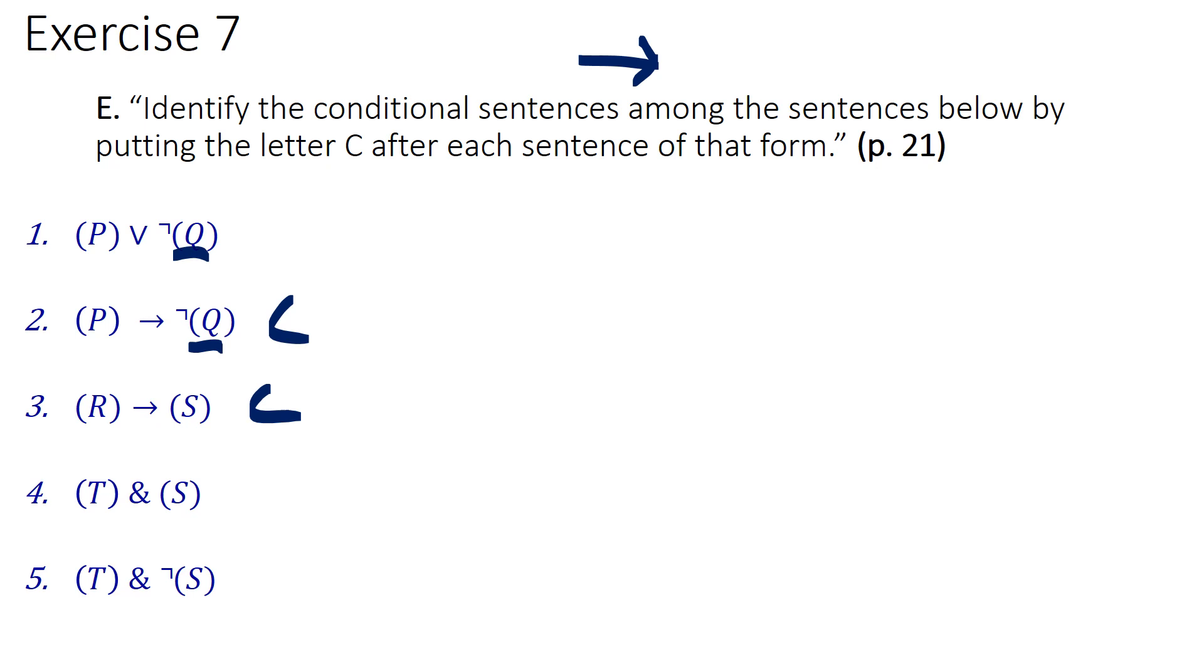Likewise, for sentence 5, we have T and not S, the negation is only affecting S, what's dominant there is the and, so it's a conjunction.